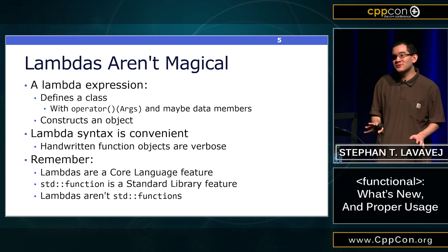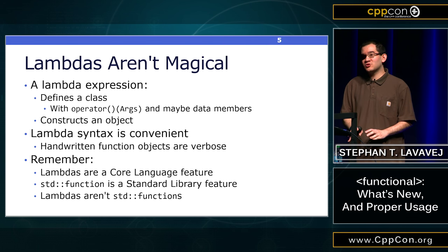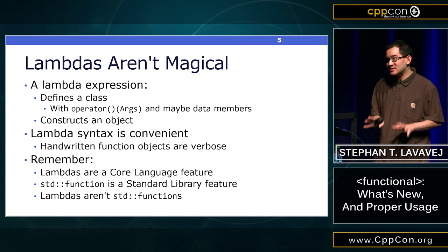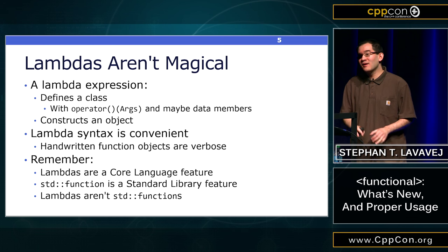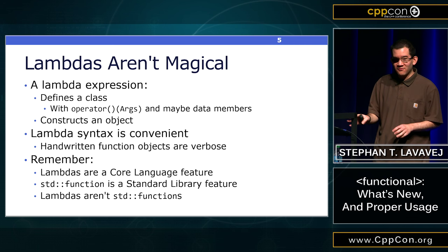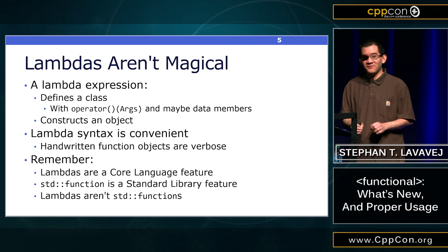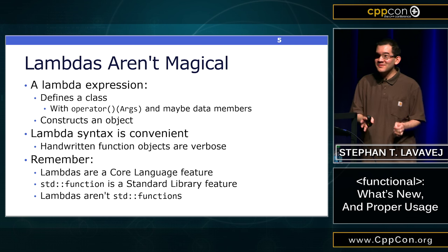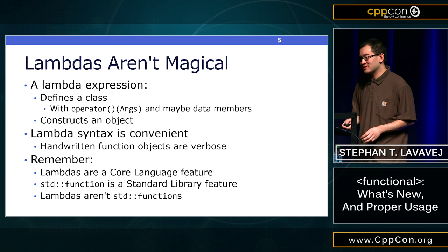There's a lot of confusion: lambdas are a core language feature, part of the compiler, available without including any standard library machinery. They are not std::functions. They can be stored in std::functions — we'll go over that at the end of the talk — but they are not std::functions. If anybody says a lambda is a std::function, you need to correct them. They're completely different.